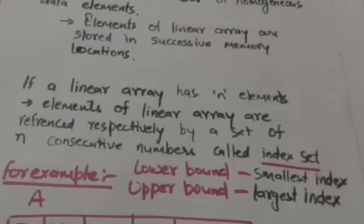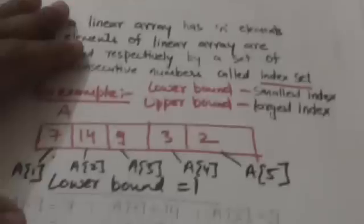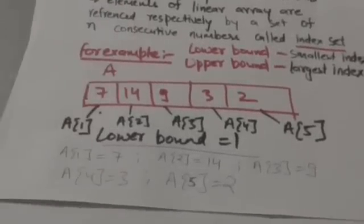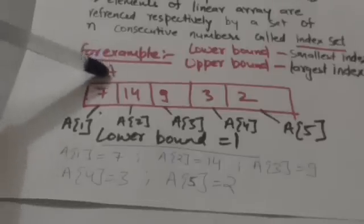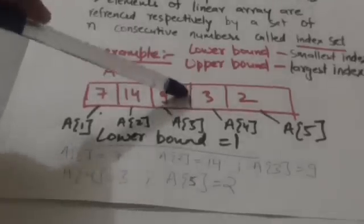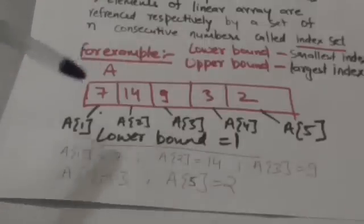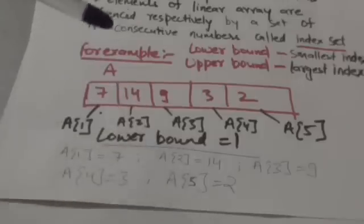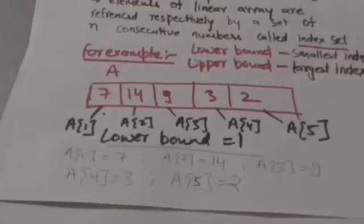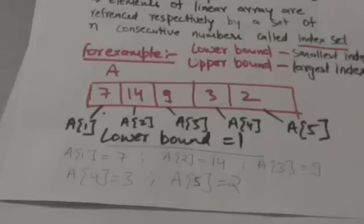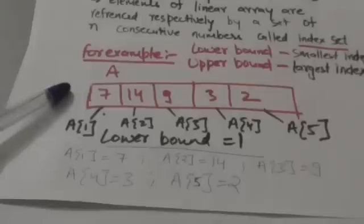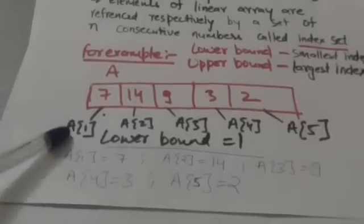The smallest index is called the lower bound and the largest index is called the upper bound. For example, there is a linear array A having five elements: 7, 14, 9, 3, 2. These elements of linear array A will be stored in successive memory locations.